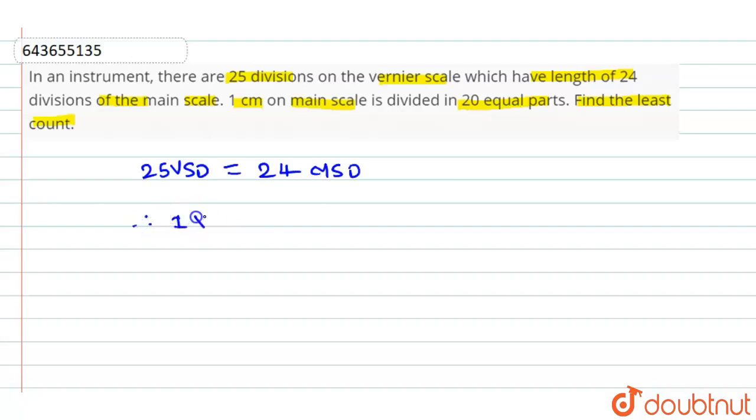Therefore, 1 VSD, that is 1 vernier scale division, will be equal to 24 divided by 25 main scale division, which will be equal to 0.96. 24 divided by 25 will be equal to 0.96 MSD, that is main scale division.